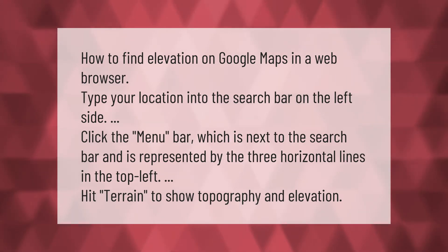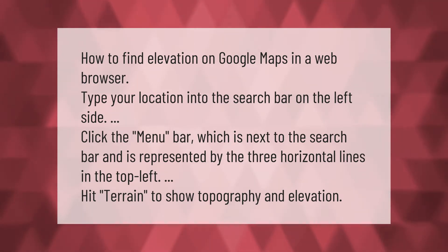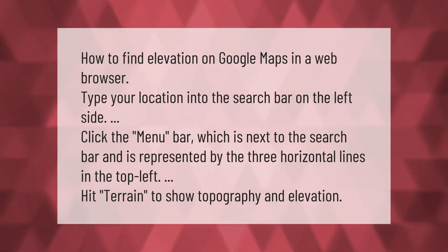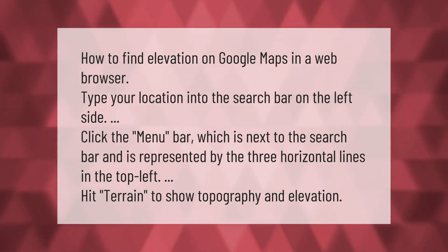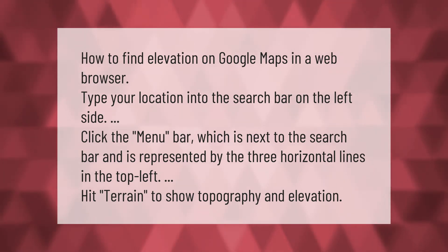How to find elevation on Google Maps: in a web browser, type your location into the search bar on the left side. Click the menu bar, which is next to the search bar and is represented by the three horizontal lines in the top left. Hit Terrain to show topography and elevation.